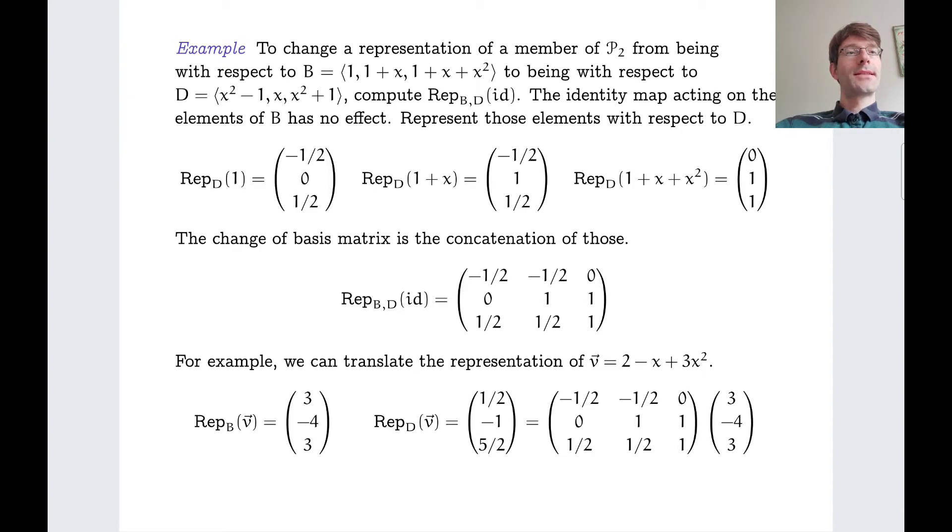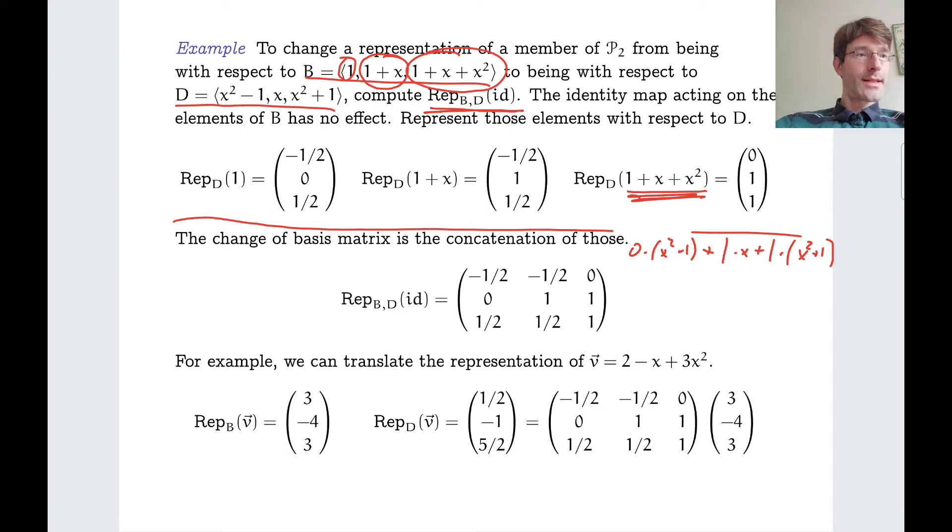Again, an example. Let's look at polynomials of degree at most 2. Here's the basis. Here's another basis. We are interested in this change of basis matrix. And we can compute it by representing the old basis elements with respect to the new basis. We've done this often. Let's just check the last thing. So 1 plus x plus x squared should be 0 times the first new basis element. 0 times x squared minus 1 plus 1 times x plus 1 times x squared plus 1. And that really gives us 1 plus x plus x squared. So that's correct. And then we take these columns and use them as columns of our change of basis matrix.